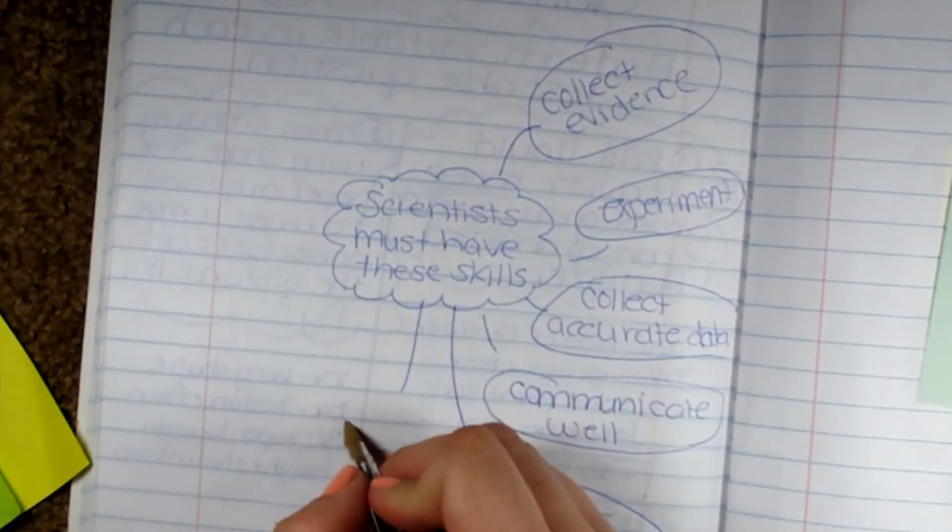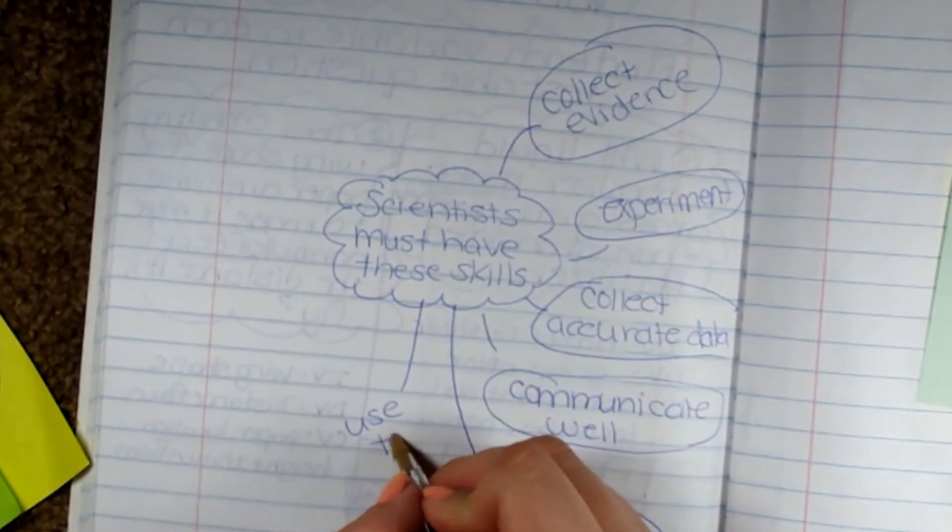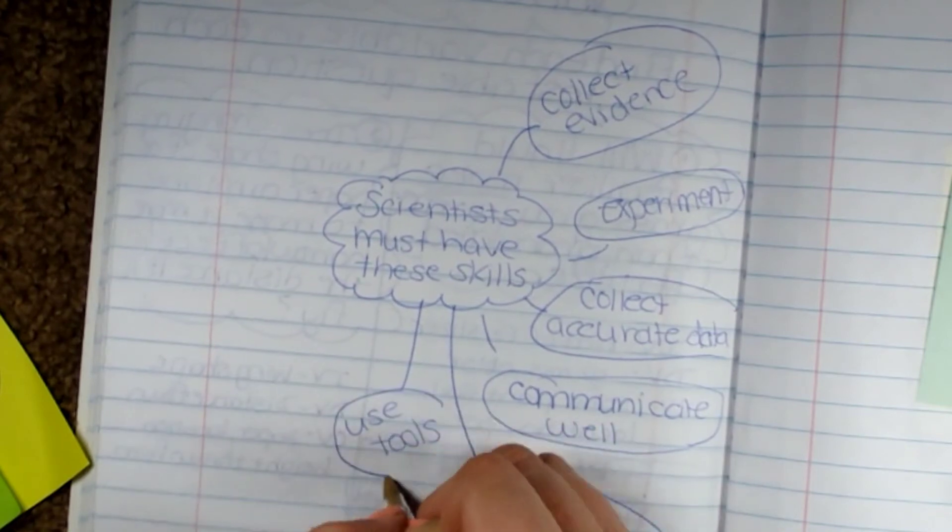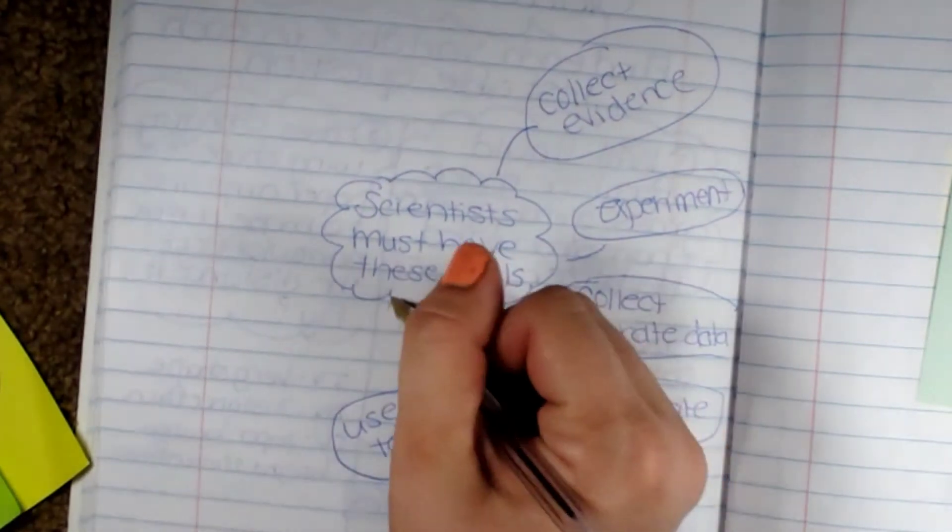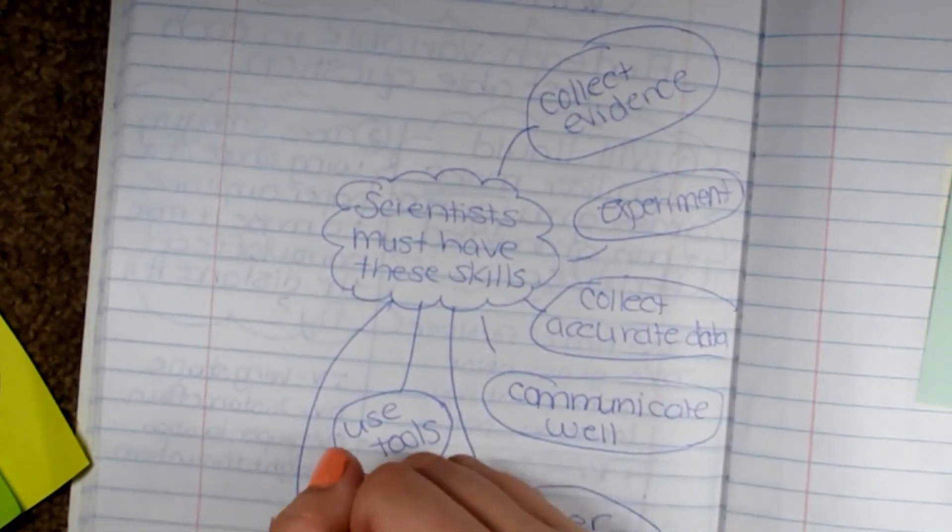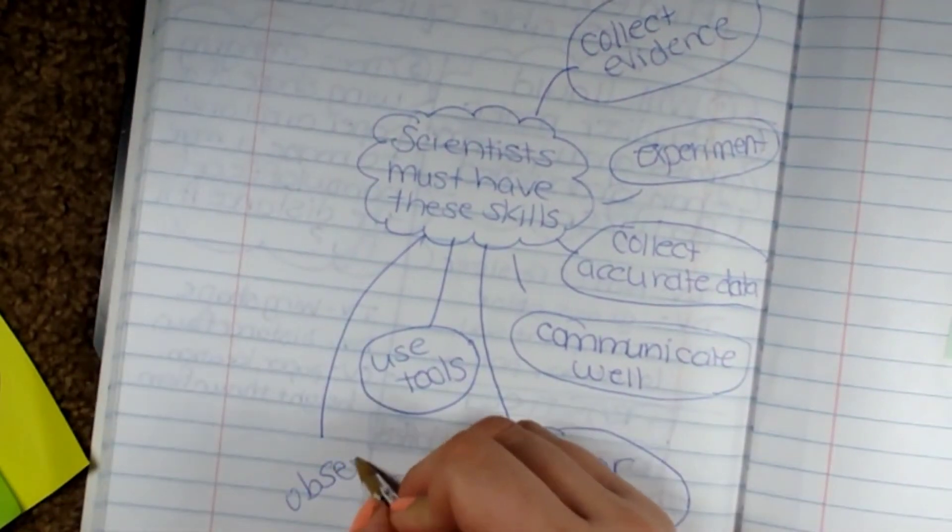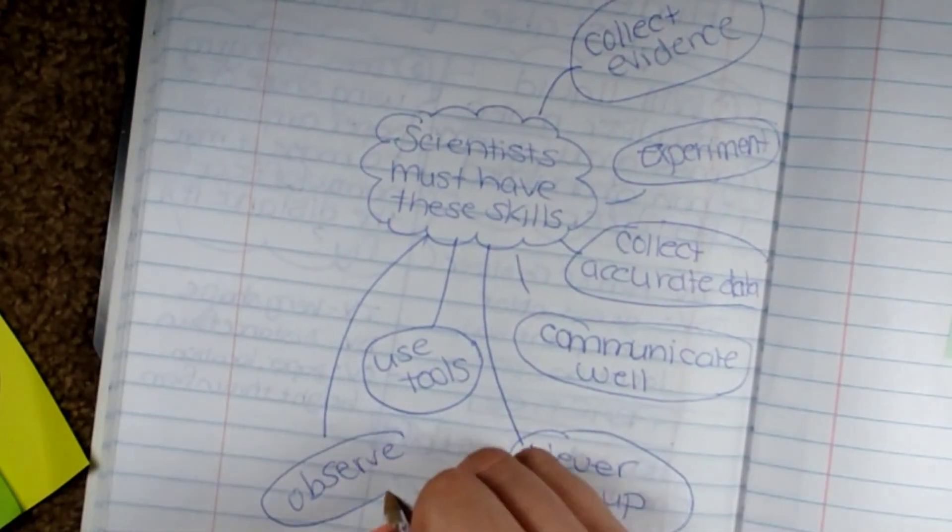They have to be able to use tools, which we'll learn about later in this chapter. They have to be able to observe and take notes on what they see.